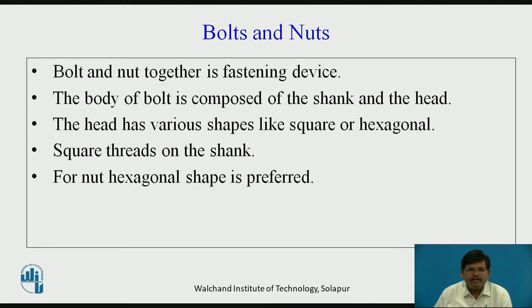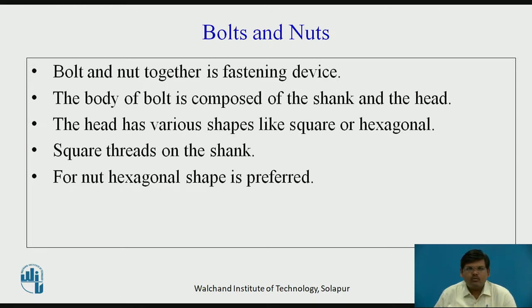The bolt body can be divided into two parts. The longer part is called the shank and the top surface is called the head, which has different shapes like square, hexagonal, or circular with certain clamping arrangement. Square threads on the shanks are mostly preferred for better locking or fastening applications. For the nut, hexagonal shape is the most preferred one.